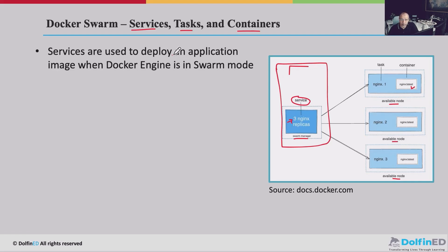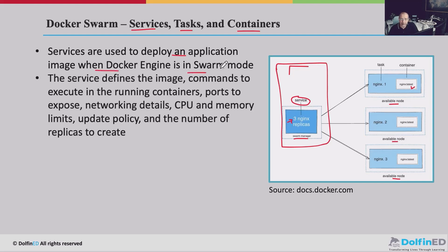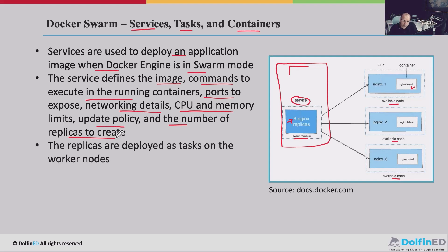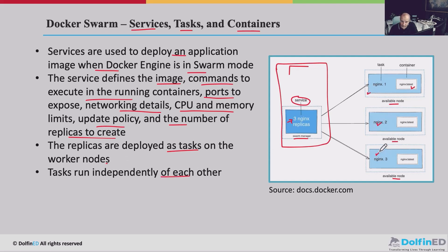Services are used to deploy an application image when Docker engine is in swarm mode. The service defines a lot of things about the container: the image, what commands to execute, what ports to expose, networking details, CPU and memory allocation, update policy, and the number of replicas to create. This allows us to control the creation of multiple containers on multiple Docker hosts managed as a cluster by the swarm managers. The replicas are deployed as tasks on the worker nodes, and each task includes one container — tasks run independently from each other.